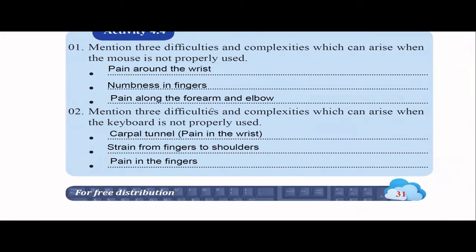Similarly, three difficulties from improper keyboard use. The keyboard also affects the fingers, hand, and elbow. Carpal tunnel syndrome is a common wrist problem from excessive typing without proper posture. You can also get strain from the fingers to the shoulders, including numbness in the fingers. If you don't type properly using both hands with the correct fingers on the right keys, you will face different problems.